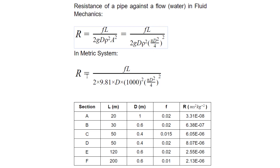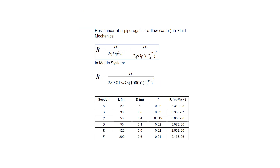So if we put the constants in the equation in the metric system: G is 9.81, and Rho, the density, is 1000. Then we have three variables to obtain R — F, L, and D. If we have different sections or different cases for our problem with different input parameters, then we have to calculate R every time in our calculator. So we just define this equation one time in our calculator, and every time we call it with different input variables. That saves a lot of time.